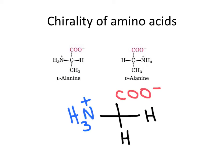We have here an L-alanine and a D-alanine. These are enantiomers because they are the mirror image of one another — non-superimposable — but only the L-amino acids are used during protein synthesis.